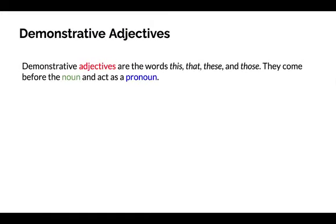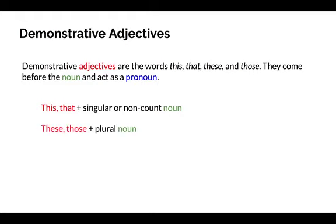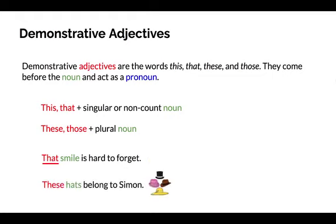Demonstrative adjectives are the words this, that, these, and those. They come before the noun and act as a pronoun. A formula for a demonstrative adjective may look like this: this or that plus a singular or non-count noun, or these or those plus a plural noun. For example, that smile is hard to forget and these hats belong to Simon. That and these are the demonstrative adjectives.